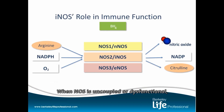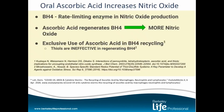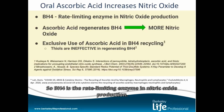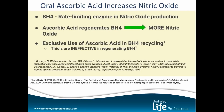When NOS is uncoupled or dysfunctional, it produces superoxide instead of nitric oxide, increasing oxidative stress. BH4 is the rate-limiting enzyme in nitric oxide production, and ascorbic acid is the only molecule that can regenerate BH4. Glutathione is ineffective in doing this.